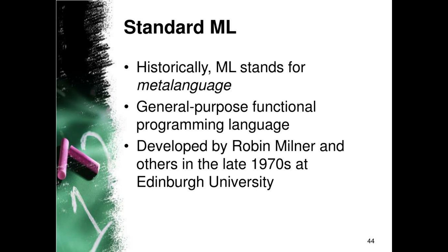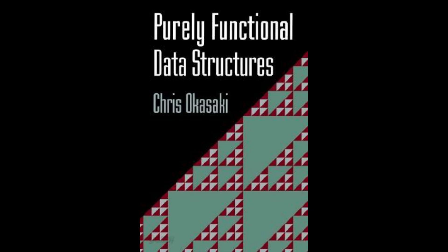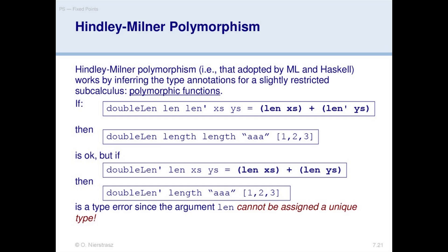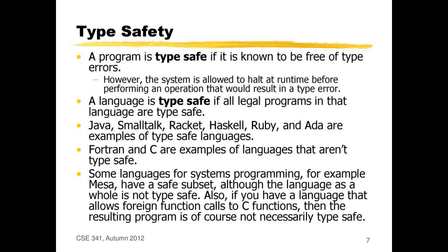ML was developed in 1978 at the University of Edinburgh, originally designed to help mathematicians prove theorems. ML was the first language to introduce immutable data structures, and it introduced a powerful type system known as the Hindley-Milner type system, which ensures programs are type-safe by preventing type errors such as initializing a string as an integer. Major languages featuring the Hindley-Milner type system include Rust, OCaml, Standard ML, Haskell, and Clean.